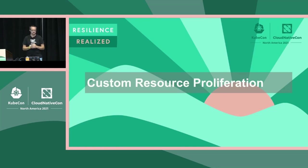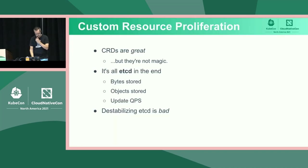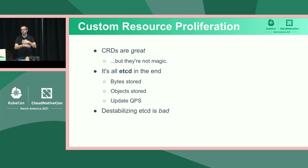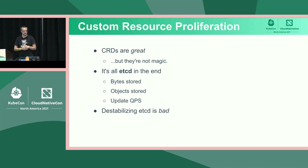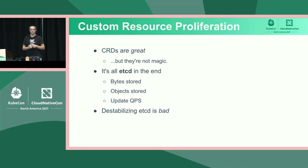That leads to my next issue: custom resource proliferation. Custom resources are great — Tekton and Argo wouldn't exist without them. But fundamentally they're not magic. At the end of the day, CRDs are just writing to etcd. And etcd, while also really great, is not magic. It's not the key to unlocking free, infinite, scalable storage. You will hit limits, and when you hit those limits you will experience pain — in a few dimensions.